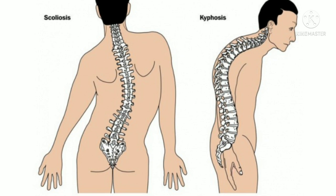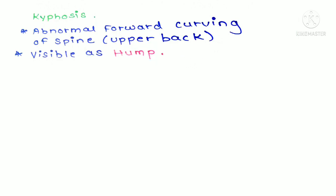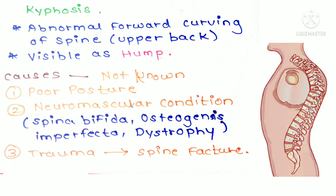The next deformity is kyphosis, which is an abnormal forward curvature of the spine visible as a hump in the upper back area. The exact cause is not known, but it can be related to poor posture, neuromuscular conditions such as osteogenesis imperfecta, muscular dystrophy, or spina bifida, or it can be the result of trauma leading to a spinal fracture.